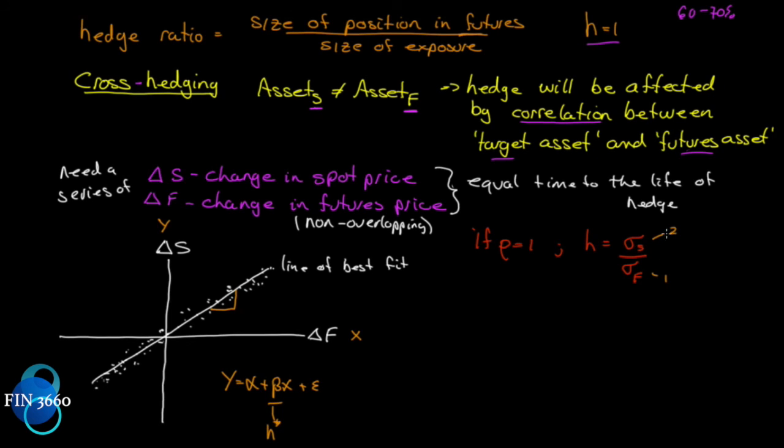Let's say that the standard deviation of the price change in the spot is two times that of the futures contract. You'd need a hedge ratio of two. And what this is saying is to hedge out an asset that moves twice as much in price as the futures contract, you'd need two futures contracts just to negate this. Does that make sense? You'd need two futures contracts just to negate that.